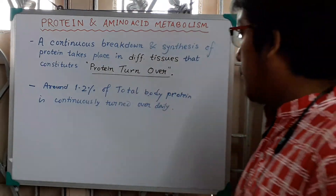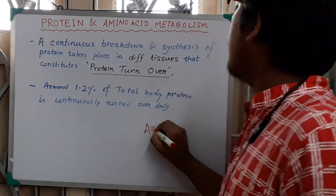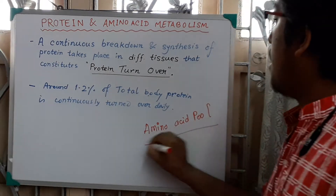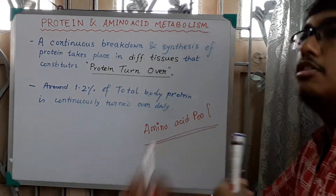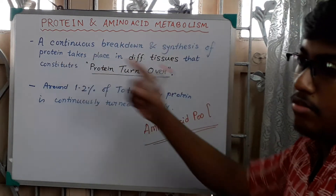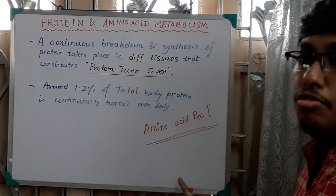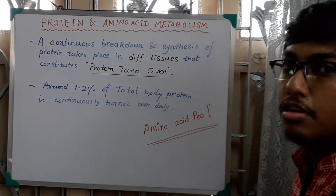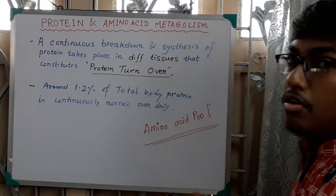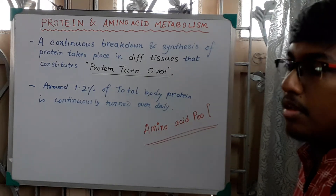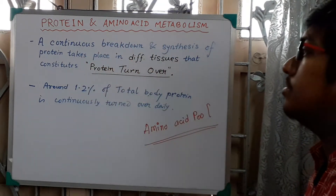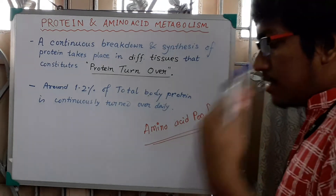From this amino acid pool, new protein will be synthesized. So protein breaks down to the amino acid pool, and then new protein is synthesized in our body for further metabolic purposes. There is a continuous dynamic equilibrium. This continuous synthesis and breakdown of protein that takes place in our different tissues constitutes the protein turnover.